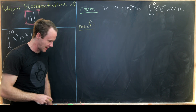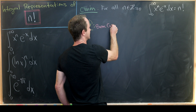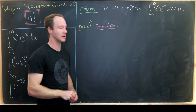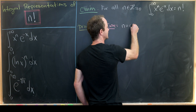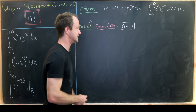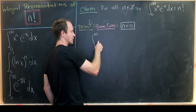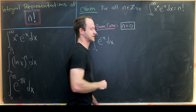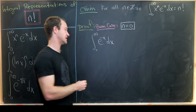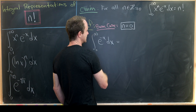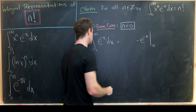To prove this with mathematical induction, we need a base case to start us off. The base case is generally the smallest value of the iterator, which is n equals zero in this case. So we take the integral from zero to infinity of x to the zero — which is one — times e to the minus x dx. Taking the antiderivative, we get minus e to the minus x evaluated from zero up to t.